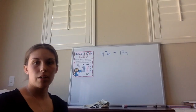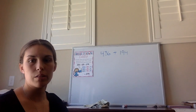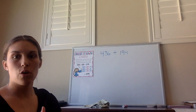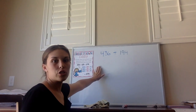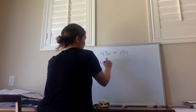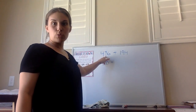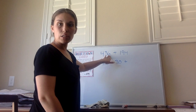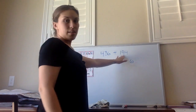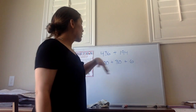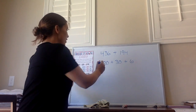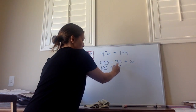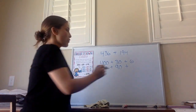Our next example is 436 plus 194. I'm going to break apart 436 first into its expanded form. In 436, there is a 4 in the hundreds place, so that value is 400. There is a 3 in the tens place, so 3 tens — its value is 30. And there are 6 ones in the ones place, its value is 6. Next, I'm going to break apart 194. In 194, there's a 1 in the hundreds place so its value is 100. There is a 9 in the tens place, its value is 90. And there is a 4 in the ones place, its value is 4.